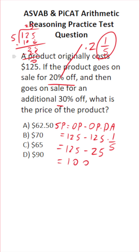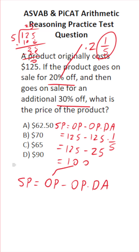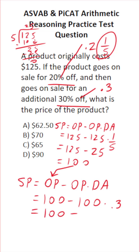Now we're going to do the same thing for our 30% discount. Sales price equals original price minus original price times discount amount. In this case, our new price is $100, so we plug that in: 100 minus 100 times our discount amount. The discount amount is 30%, which is 0.3. So this is 100 minus 100 times 0.3. 100 times 0.3 is 30, and 100 minus 30 is 70.